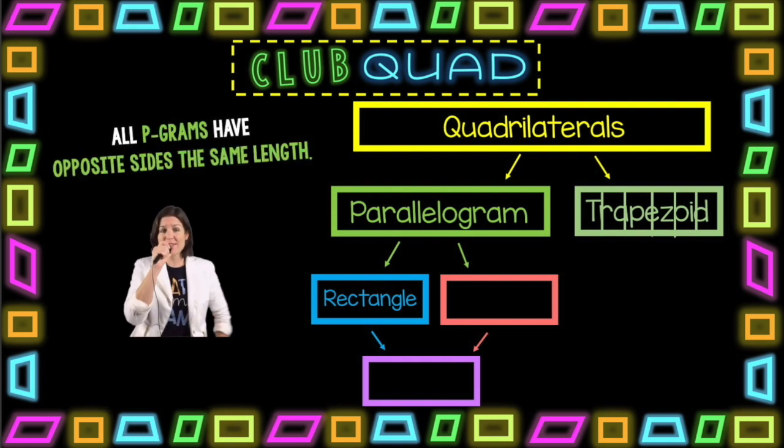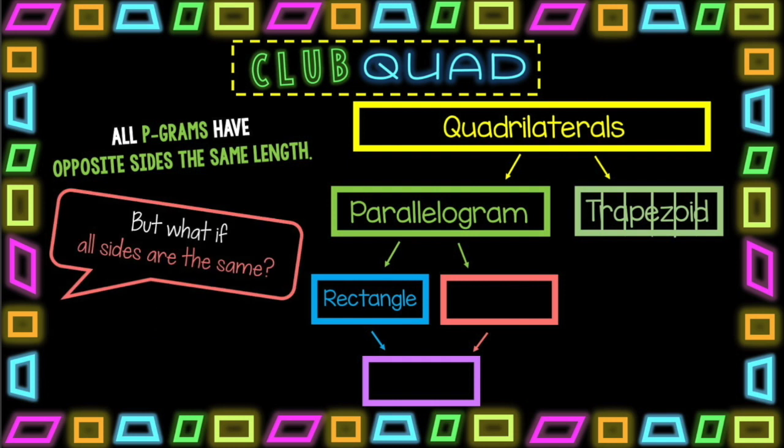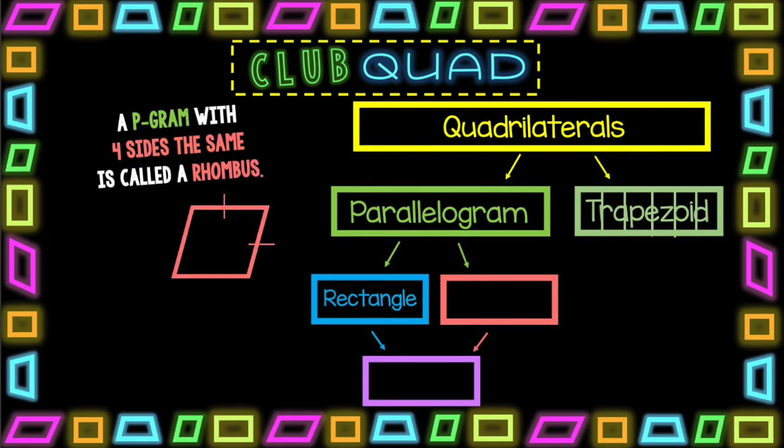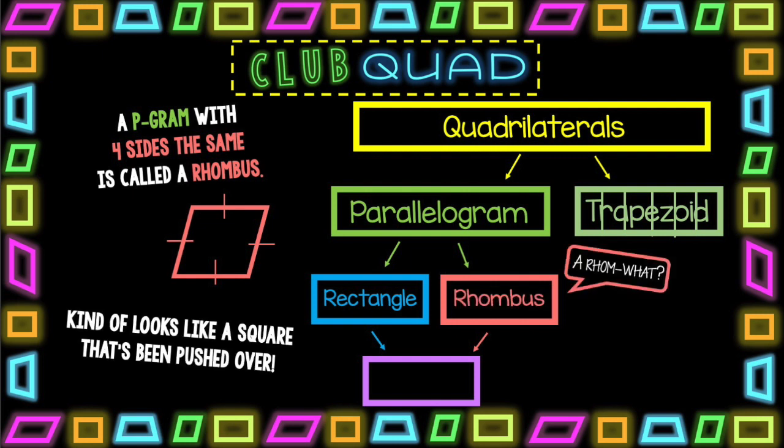All p-grams have opposite sides the same length. But what if all sides are the same? I have a question coming from your brain. A p-gram with four sides the same. It's called a rhombus. A rhombus? It kind of looks like a square that's been pushed over.